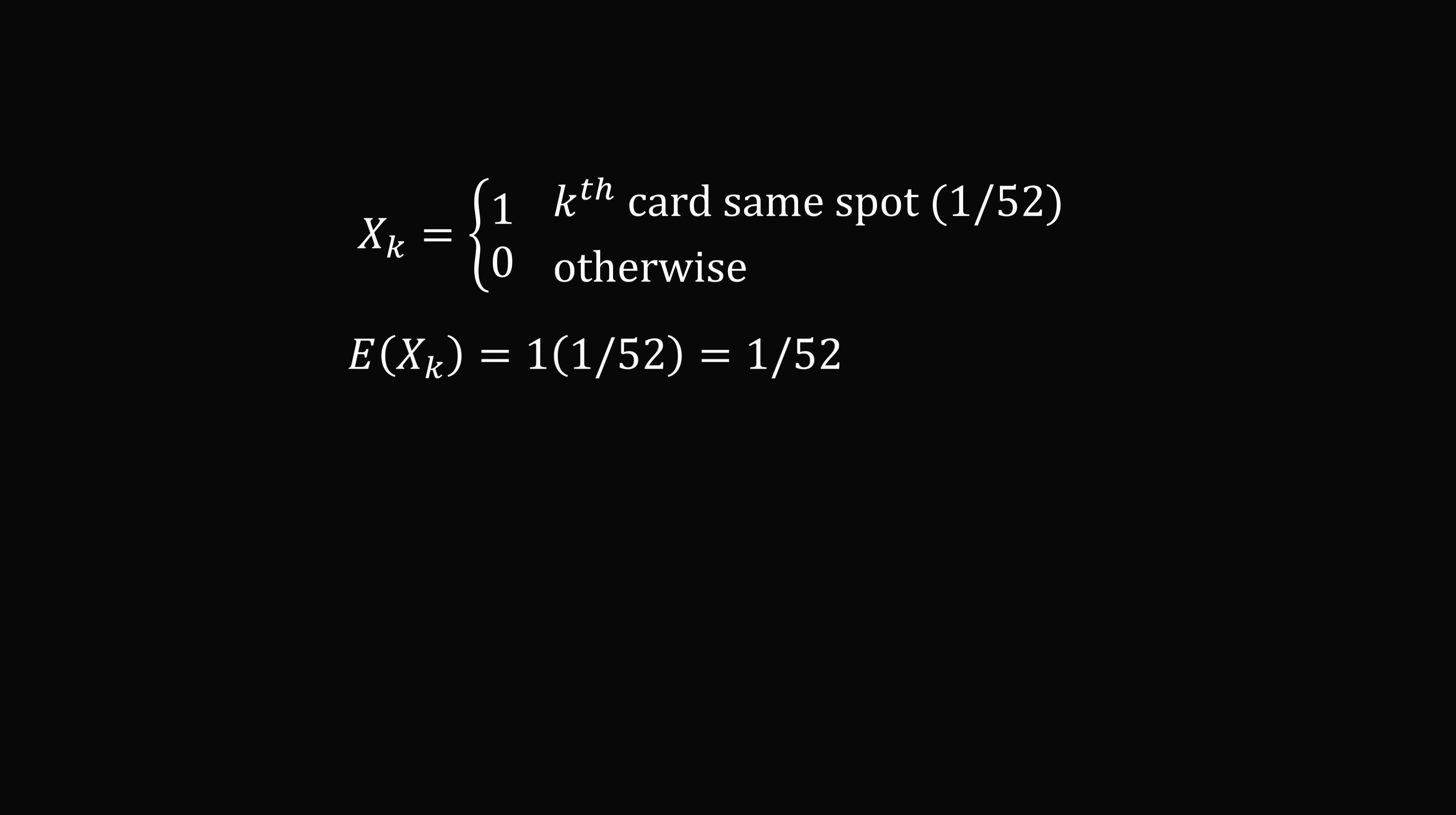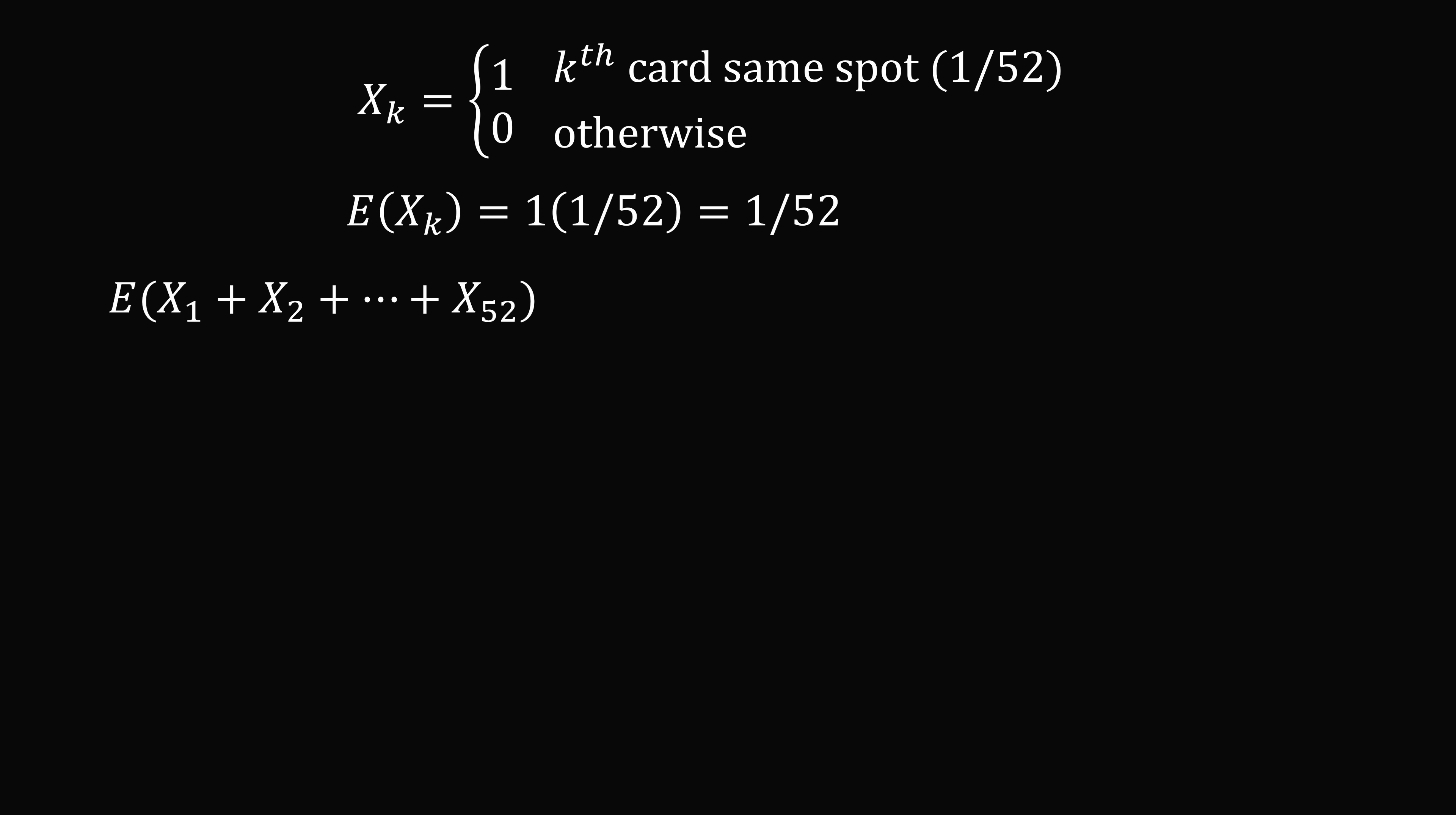So now let's do our calculation. We want the expected number for each of these cards. So we want to know how many of the 52 cards stay in the same spot. So we want the expectation of the sum of X1 plus X2 plus so on to X52. The expectation of a sum is equal to the sum of the expectations by linearity of the expectation operator. So this is equal to the expected value of X1 plus the expected value of X2 all the way up to the expected value of X52.